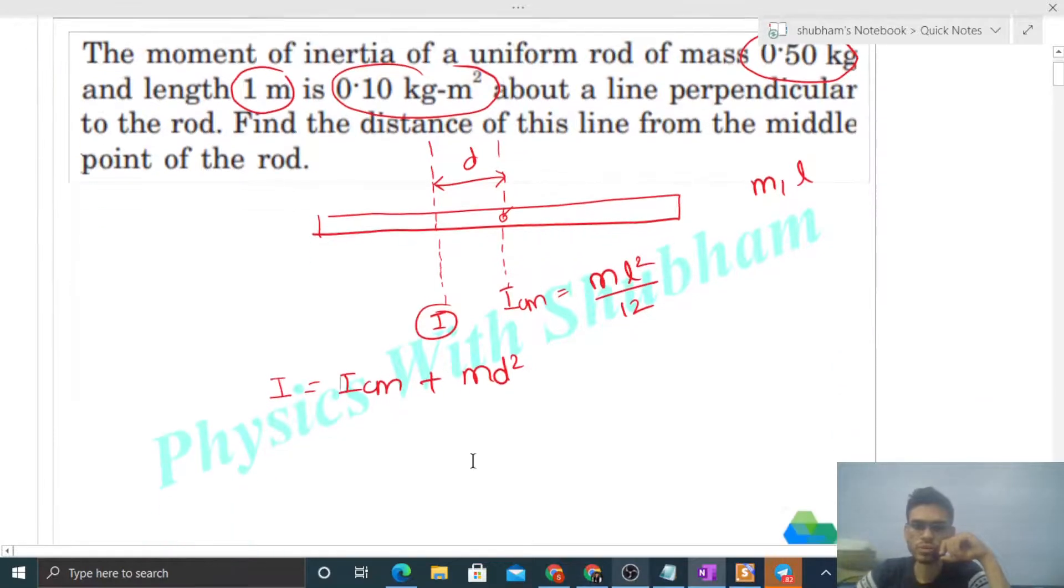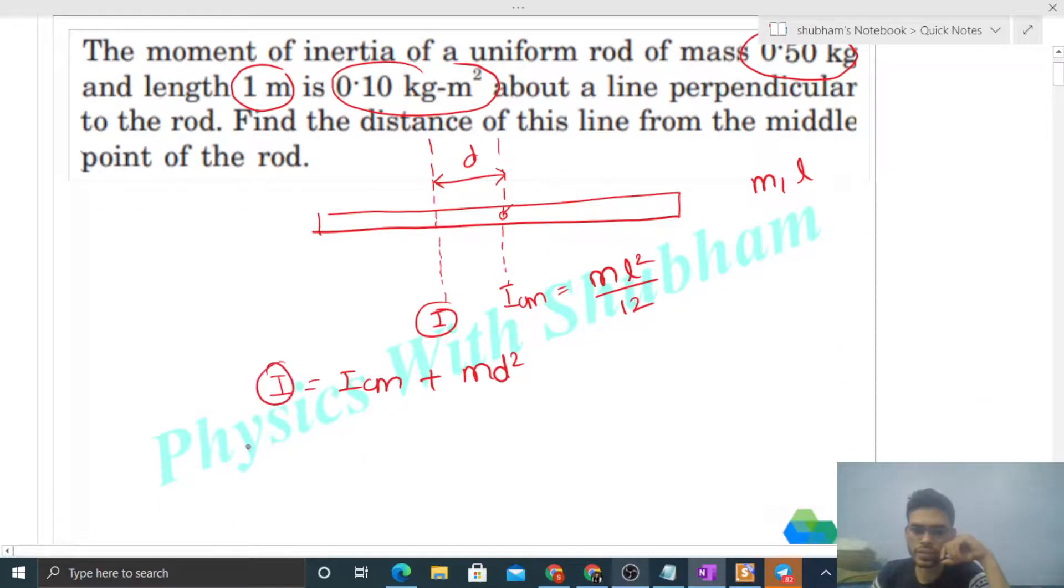So now you can see that I is given, that is 0.1. That is equal to I about center of mass, ml square by 12. How much would it be? 0.5 into 1 square, length is 1, divided by 12. So it will be 0.5 divided by 12 plus mass is 0.5 into d square. So you have to find out the value of d from here.